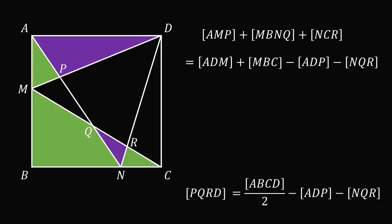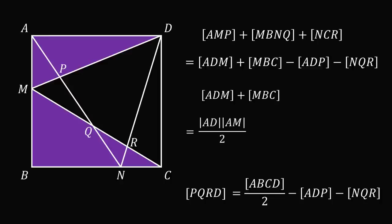Now let's calculate the areas of the triangles ADM and MBC. The area of triangle ADM is equal to AD multiplied by AM all over 2. And the area of triangle MBC is equal to AD multiplied by MB all over 2. We can now factor and we end up with AD multiplied by the quantity AM plus MB all over 2.